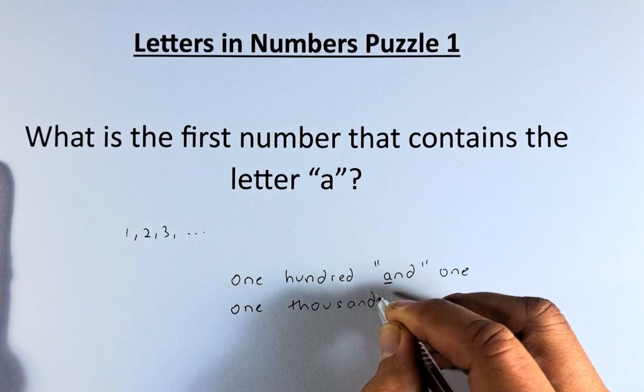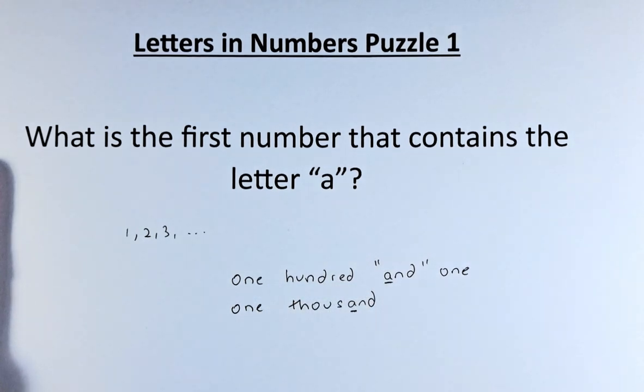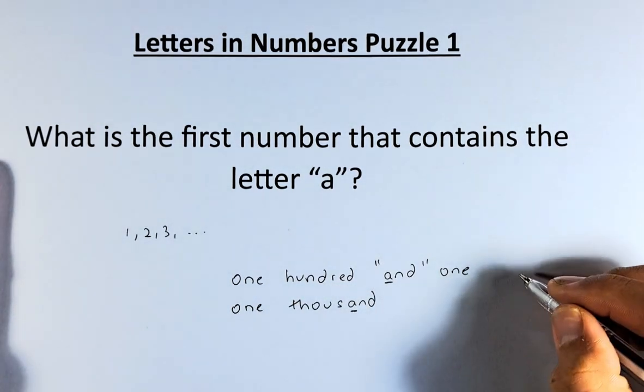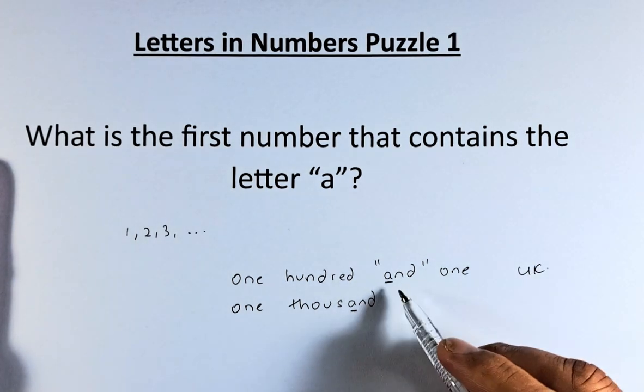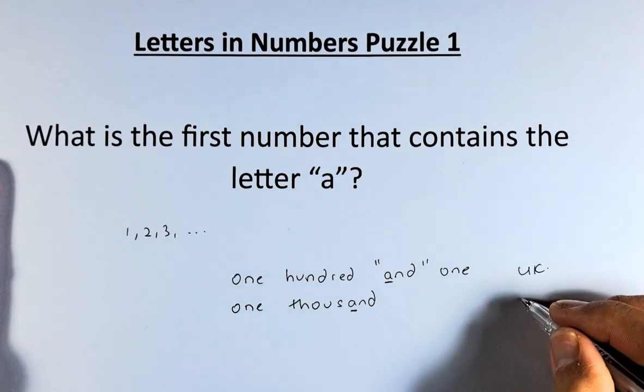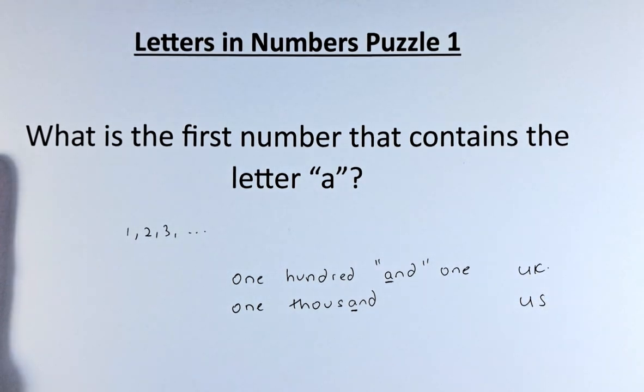It's amazing, isn't it? The A appears at 1,000. So again, in the UK, the first number is 101 if you include the conjunction 'and'. And in the US, the first number that contains the letter A is 1,000.